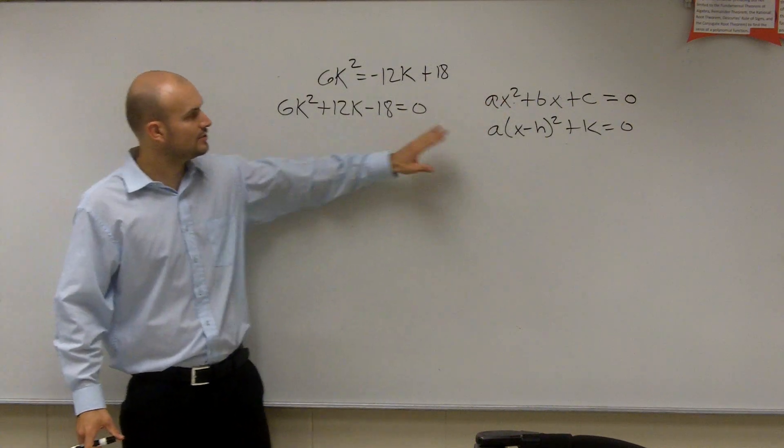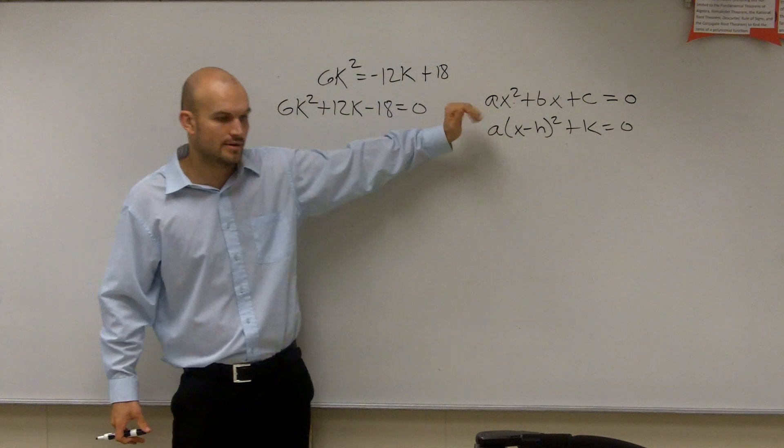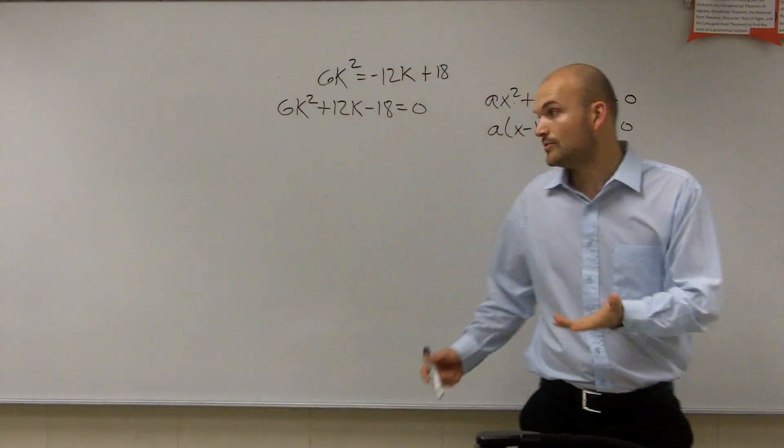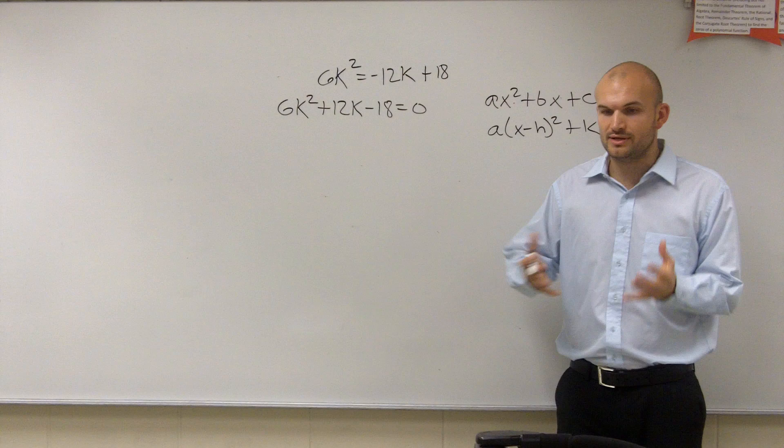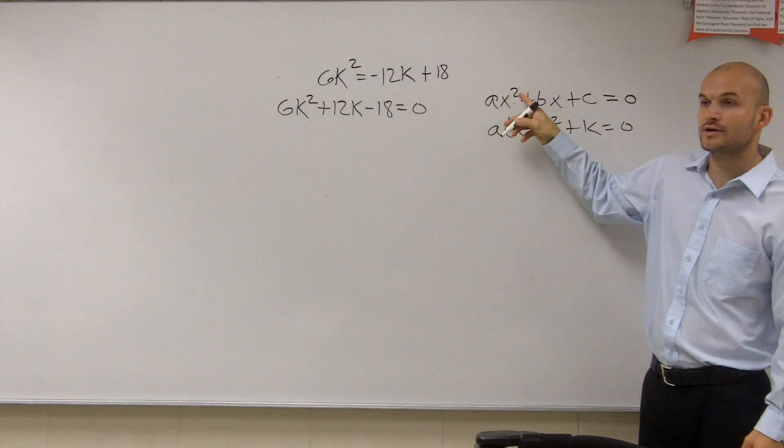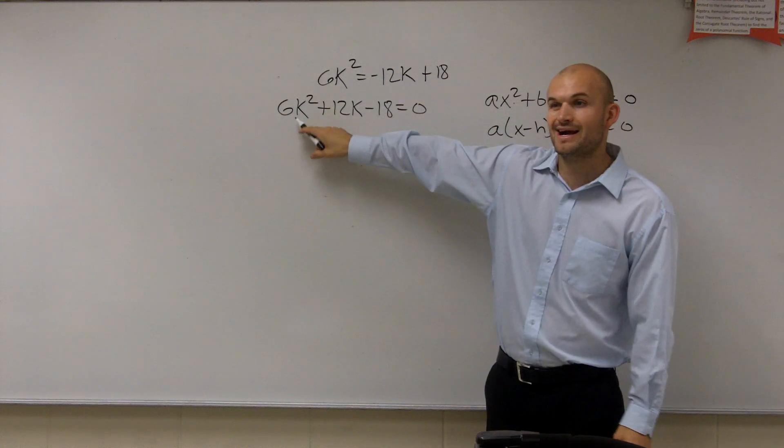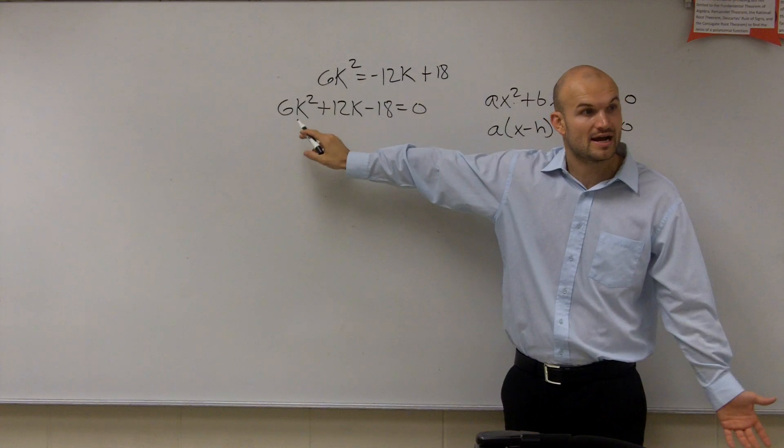So the first thing you're going to want to do is make it look like your definition of a quadratic. Get it into that format. Now the next thing I want to do is before when we're completing the square, a has to equal 1. So we've got to get our coefficient of x squared to equal 1. So you look right there, I have a 6 in front of there. So I have to factor that out.